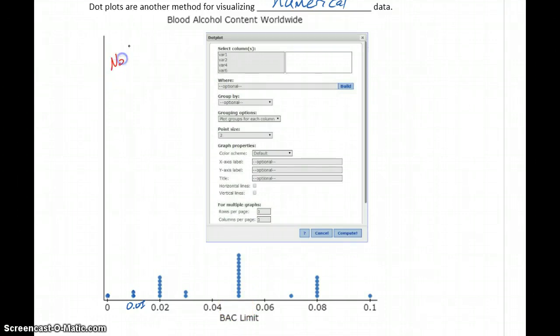Something to note here that makes this quite a bit different from a histogram is that there are no classes or bins. Each number, each row of dots corresponds to one specific data value that occurred, or one specific number that occurred.